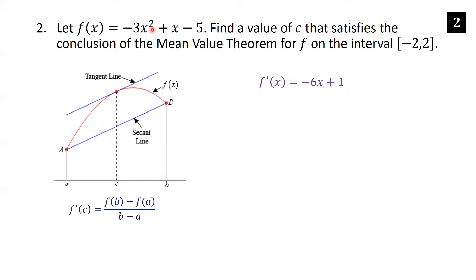We start by taking the derivative of f of x, which is just a power rule, so we get negative 6x; the derivative of x is 1, and the derivative of negative 5 is zero. It says find a value c, so I'll replace the x with a c. That's the derivative, and now we need to compute f of b and f of a.